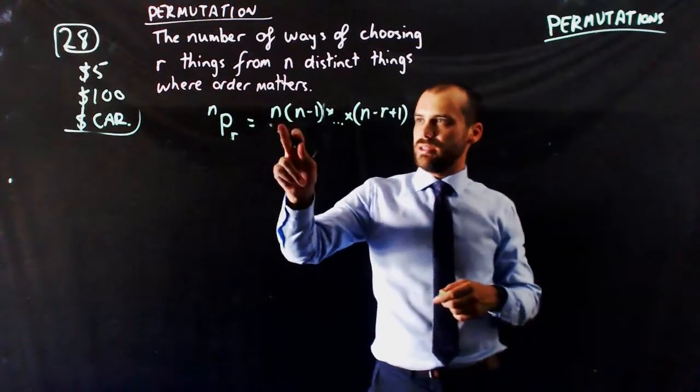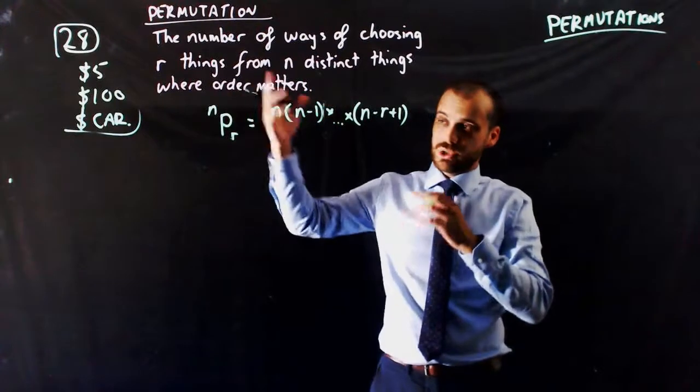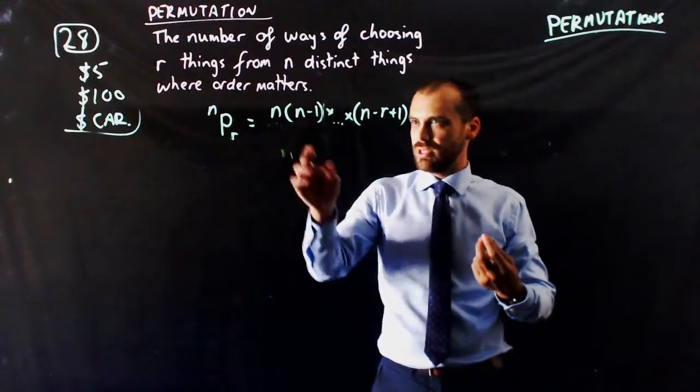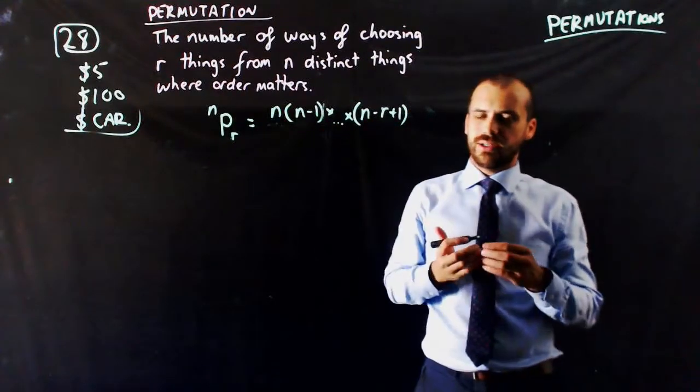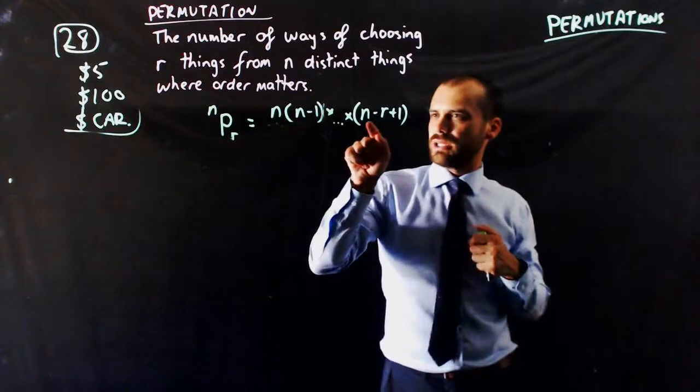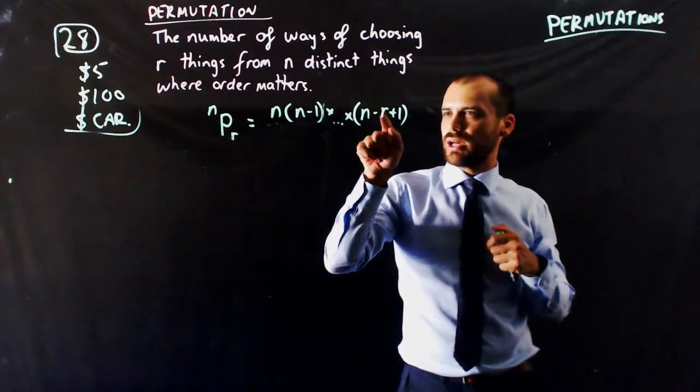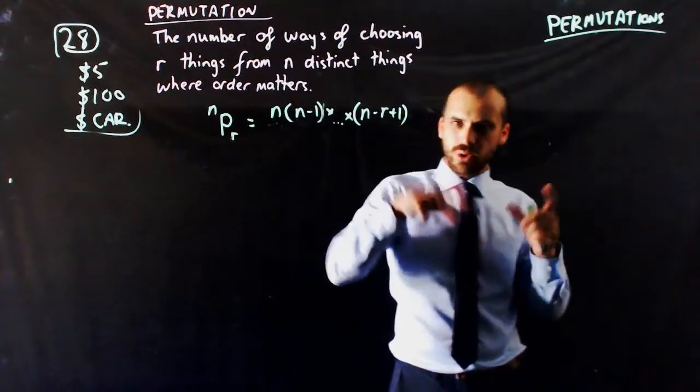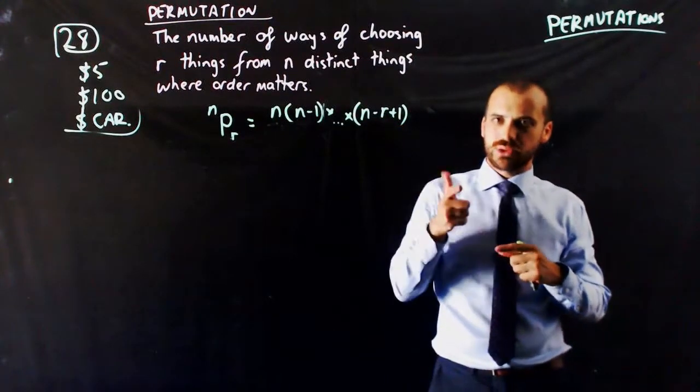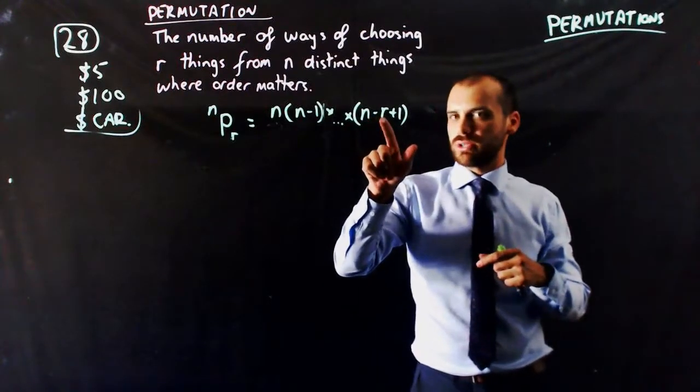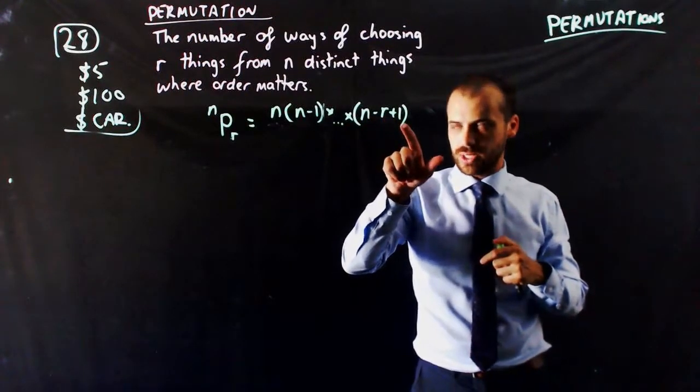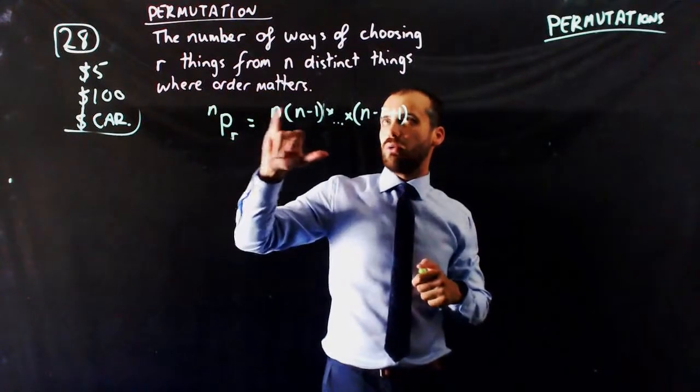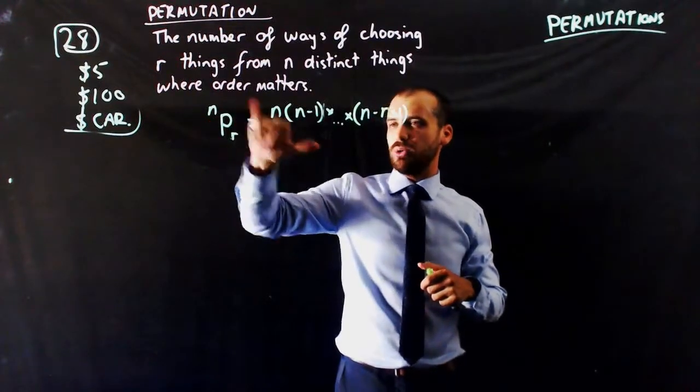That's going to be equal to n, the number of distinct things, in that case it was 28, times n minus 1, which is 28 minus 1, which is 27, times, and then I get to here, which takes a little bit of reading, 28 minus 3 plus 1, which is what we had to do. Because remember, we had to do 28 times 27 times 26. 28 minus 3 would be 25 plus 1. And so, that's our basic formula finding how many ways of choosing r things from n distinct objects where order matters.